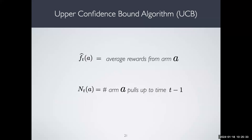Let me define some notation. I'll use F-hat-t-a to define the empirical average reward: if we're interacting with a multi-arm bandit problem and we pulled arm A a total of n-t-a times up to time t, the average reward seen for that arm is called F-hat-t.